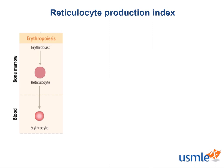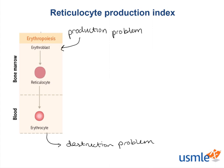Anemia, however, is loss of red blood cells, and that loss can come in two forms: either the red blood cells are not being made properly, or they are being destroyed. So you either have a production problem, which happens in the bone marrow, or you have a destruction problem, which is happening in your blood vessels.